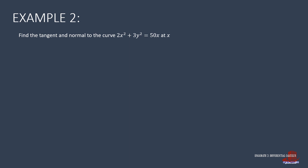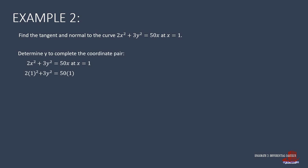Example 2: We have the equation 2x squared plus 3y squared is equal to 50x, and the x-coordinate of the point is 1. Plugging x=1 gives 2 plus 3y squared equals 50. Transposing 2, we get 3y squared equals 48. Dividing by 3, y squared equals 16. Taking the square root gives y as positive and negative 4.